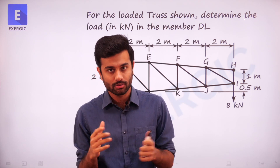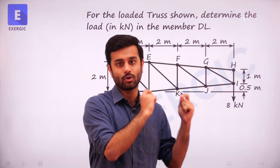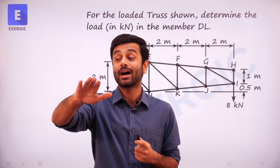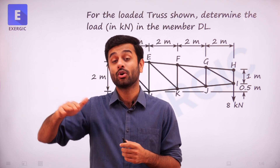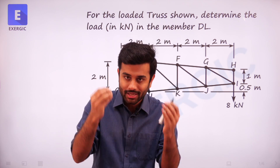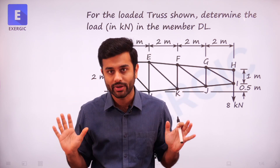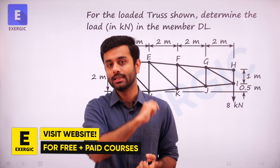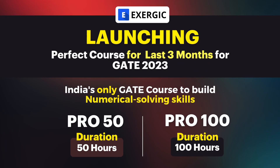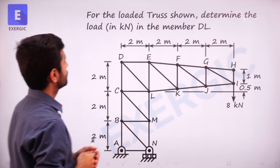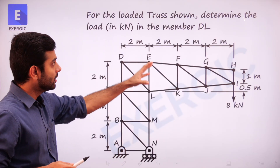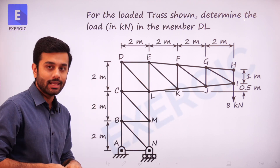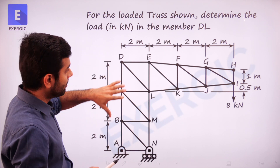Don't think it's a regular problem. Trust me, if this problem appears in an exam, many students are either going to take a lot of time solving it, or some will even give up on the question under pressure. So make sure that you understand the solution till the end. The question says: for the loaded truss shown, determine the load in kilonewton in the member DL.